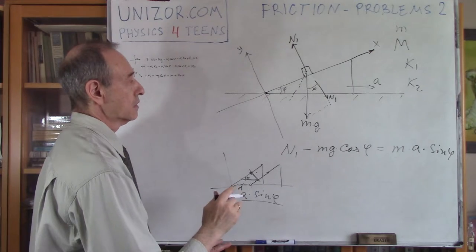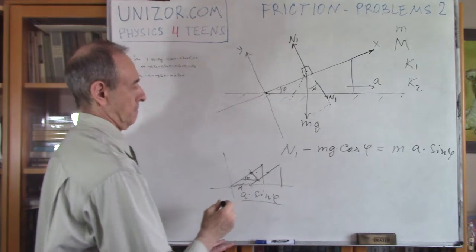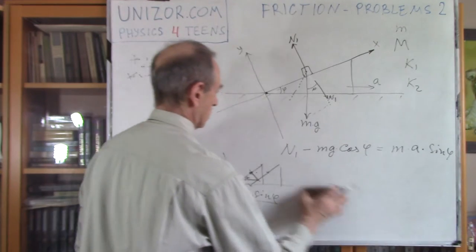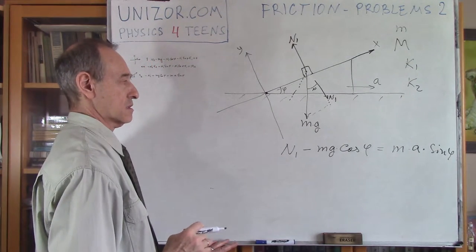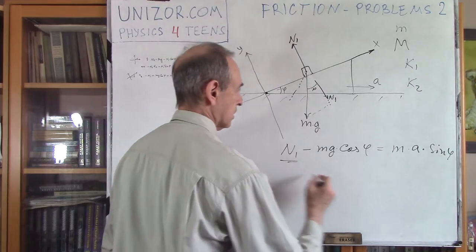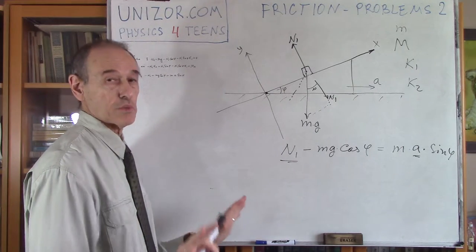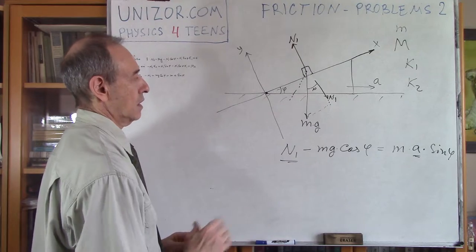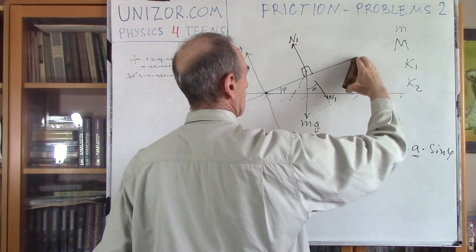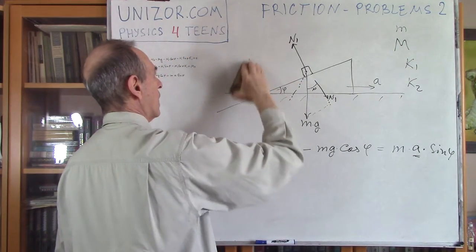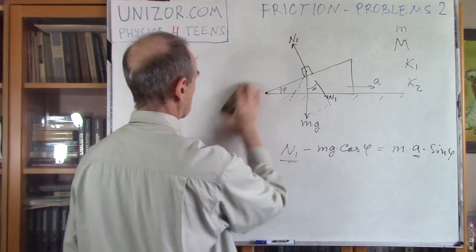So we have an equation in this case which has two unknowns — but that's okay, that's just one equation. Let's remember it and move forward. Now I would like to switch to the inclined plane itself and the laws related to its movement.